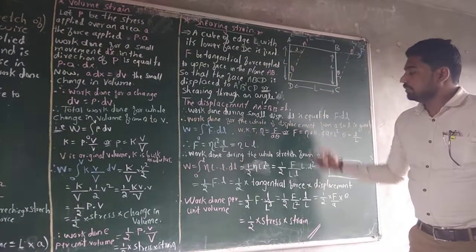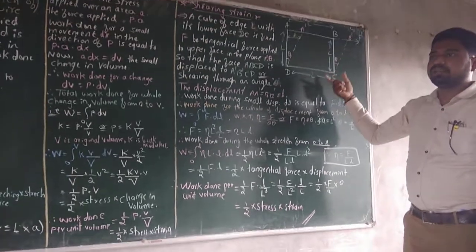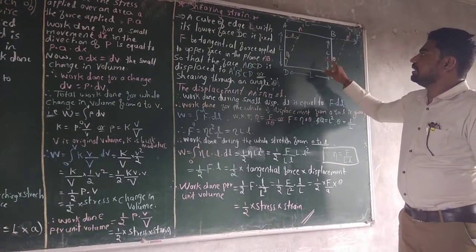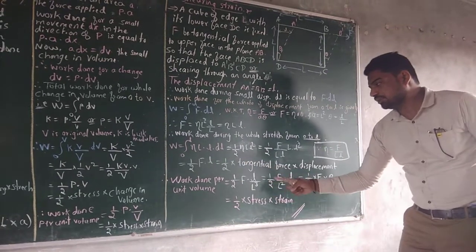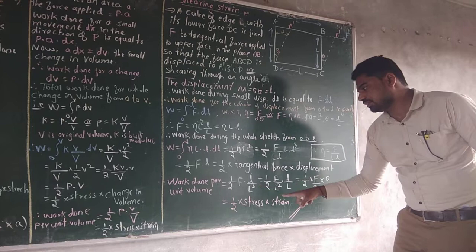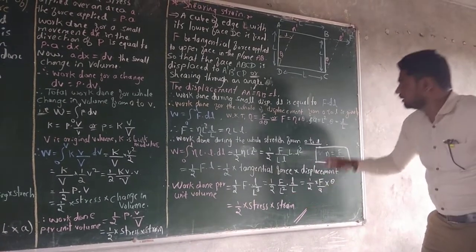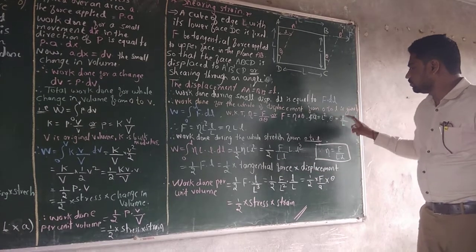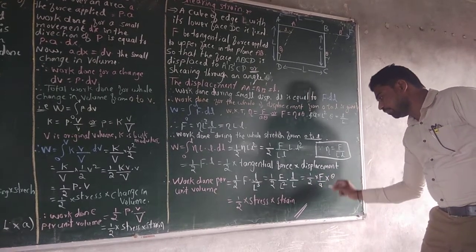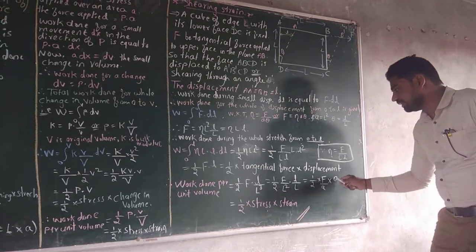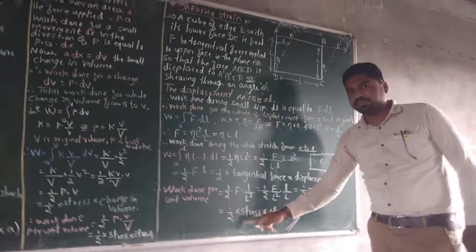Work done per unit volume: the body is a cube, so volume equals L·L·L equals L cubed. Therefore W/V equals (1/2)·F·L / L cubed equals (1/2)·F / (L squared · L) equals (1/2)·(F/L squared)·(L/L). Since L squared equals A and small L / capital L equals theta (shear angle), work done per unit volume in case of shear strain equals (1/2)·(F/A)·theta equals (1/2)·stress·strain.